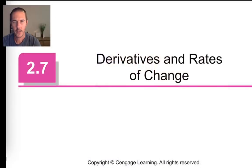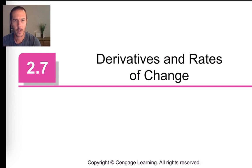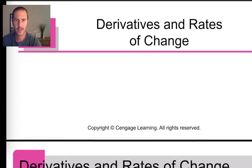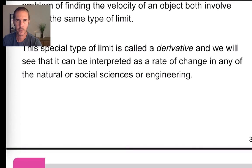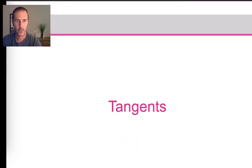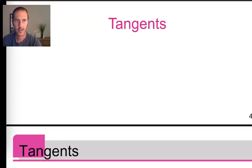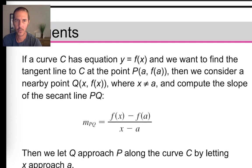Welcome to Calculus 1, Chapter 2, Section 7, where we'll talk about derivatives and rates of change. In this section I have a number of slides to go through, but we're going to blow right past some of them. At the end we'll look at a couple of homework problems and talk about the approach to solving them. The reason I'm skipping some slides is because some are redundant — they tell the back story behind the ultimate formula — and I want to cut to the chase.